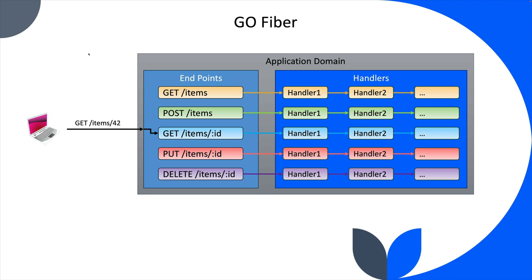I want to start by reminding you of something familiar and then build on top of that. When we did Go Fiber recently, we saw that you can have endpoints — like a GET items endpoint or a POST item endpoint. Each one is an endpoint, you have handlers for each one, and you can make a request to an endpoint.